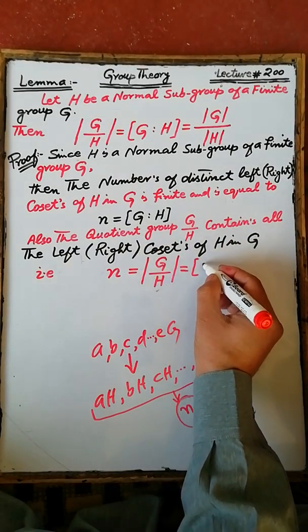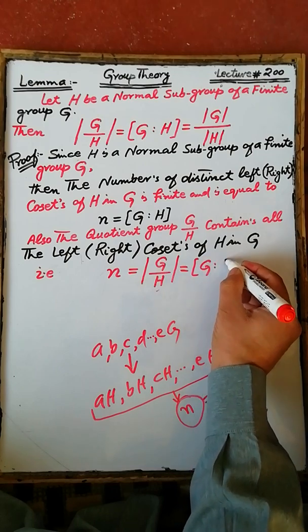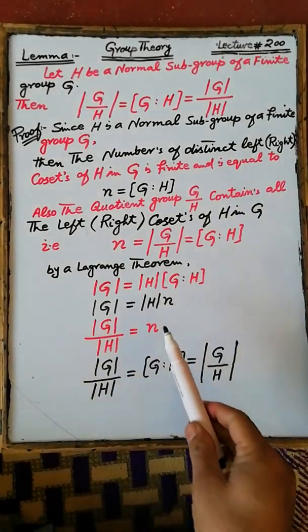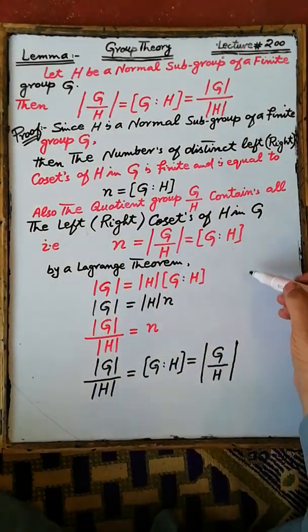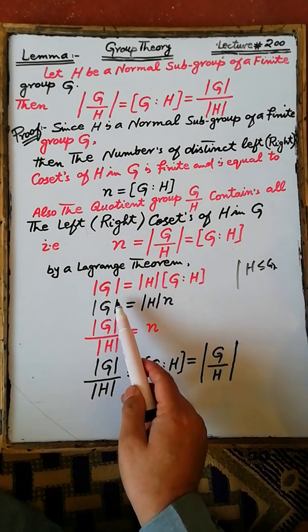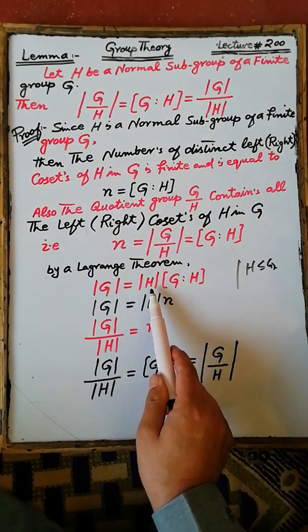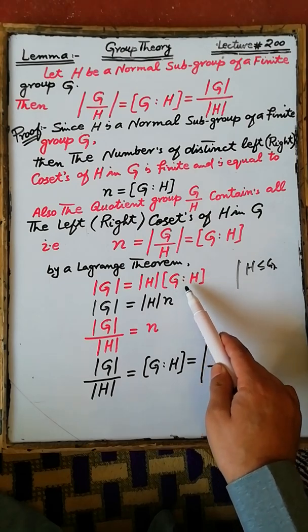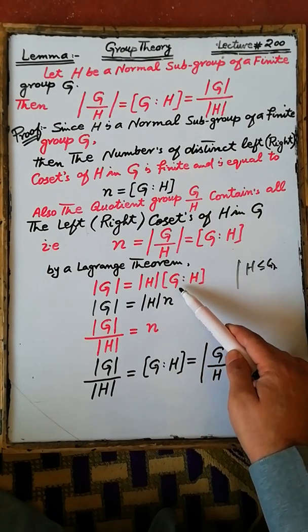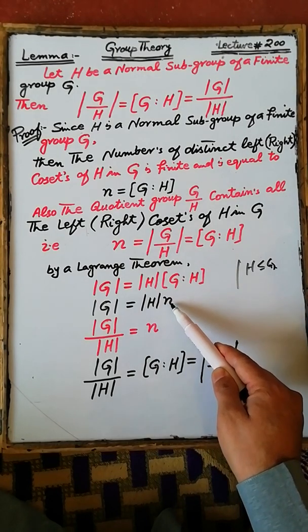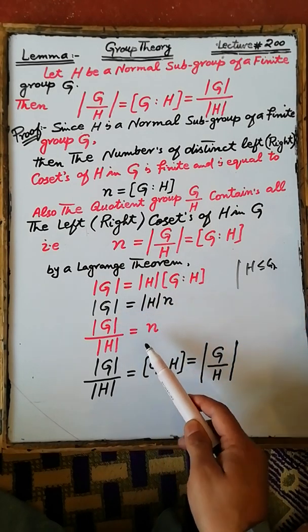Also, by Lagrange's theorem, if H is a subgroup of G, then the order of the finite group G is equal to the order of the subgroup H multiplied by the index of H in G. Since the index of H in G is equal to n, therefore the order of H multiplied by n is equal to the order of G.